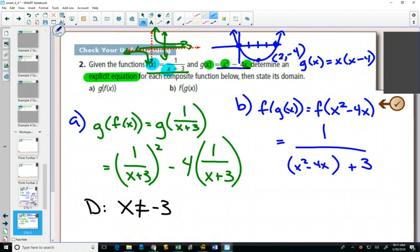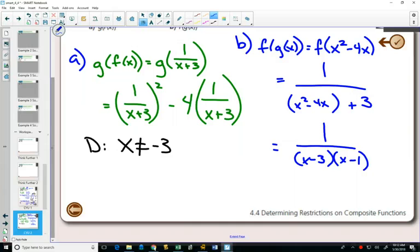Do we have any non-permissible values here? Possibly. Right? We are dividing. In line 1, we have no problems. Domain is everything. But in line 2, we're dividing. Can I factor that on the bottom? Yes, x minus 3, x minus 1. Do I have any non-permissible values? So for my domain, x can't equal 3 and x can't equal 1.